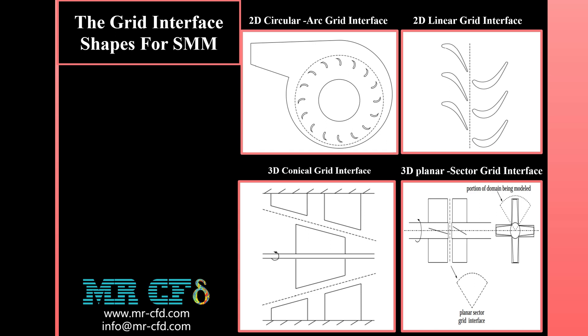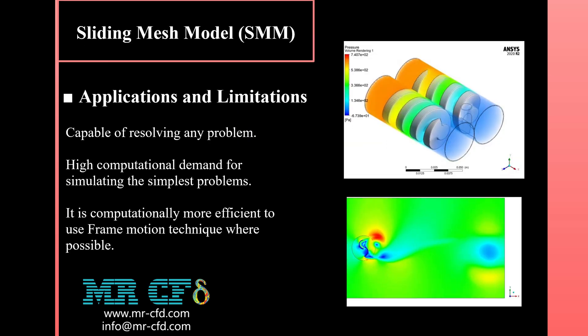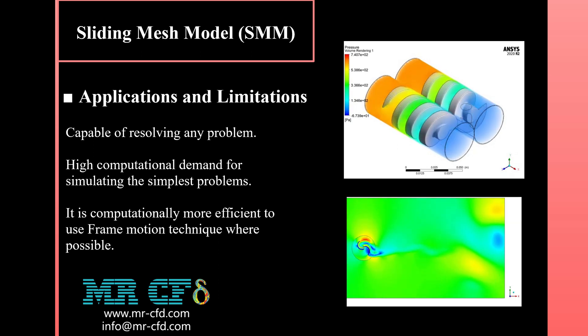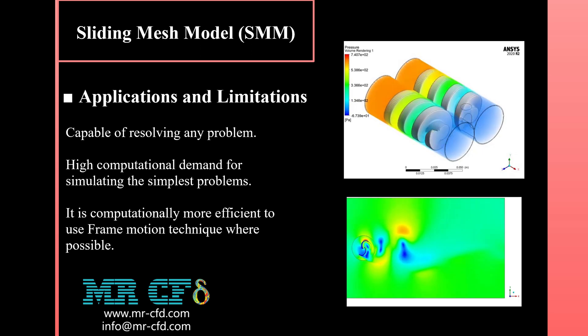For an axial rotor-stator configuration where rotating and stationary parts are aligned axially rather than concentrically, the interface will be a planar sector — a cross section of the domain perpendicular to the axis of rotation at the position between rotor and stator. Mesh motion technique can be used for almost any application; however, its biggest setback is the high computational demand. Therefore, it is computationally more efficient to use frame motion technique where possible.